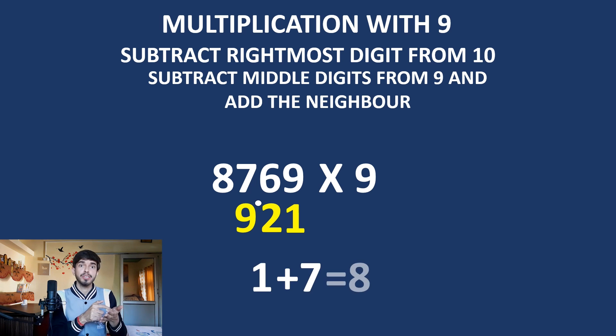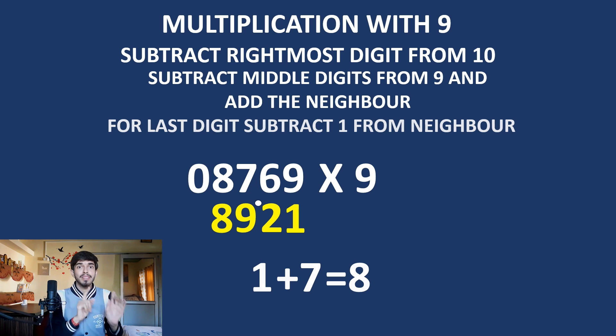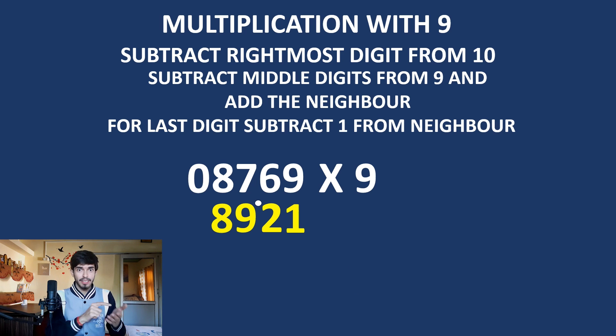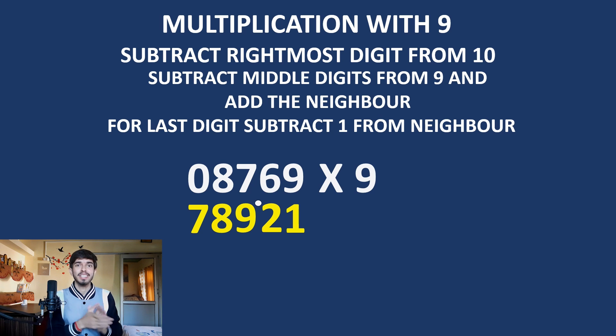For the last step, when you reach the 0, just subtract 1 from the neighbor. We have 8, so 8 minus 1 is 7. This is our answer — this is how quickly you can do it.